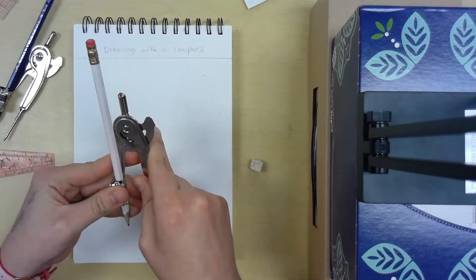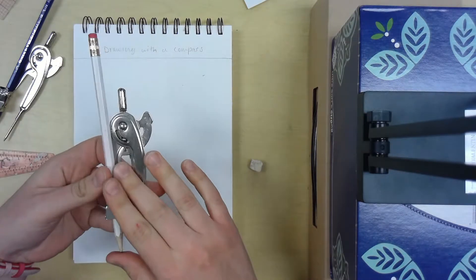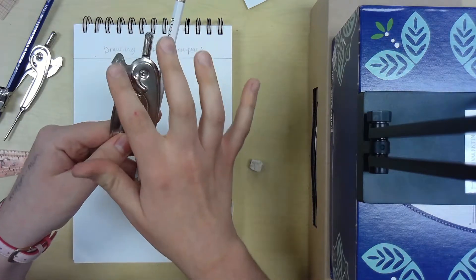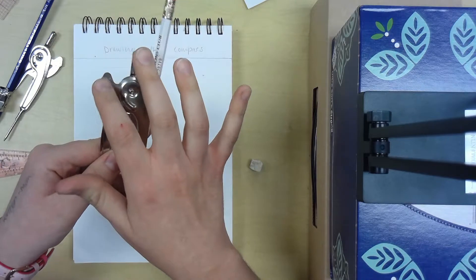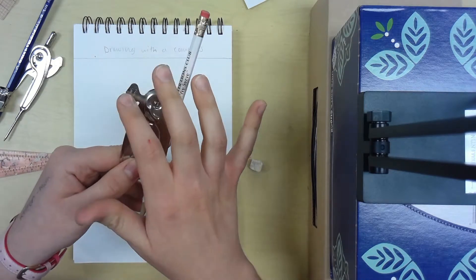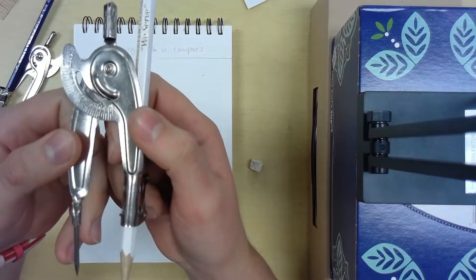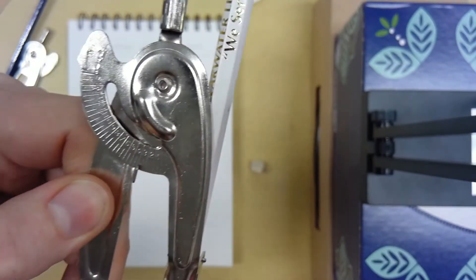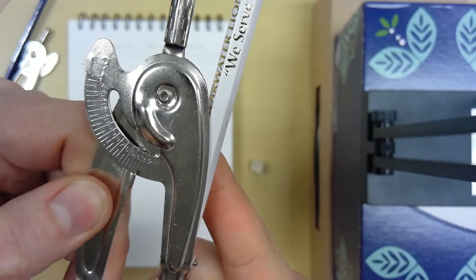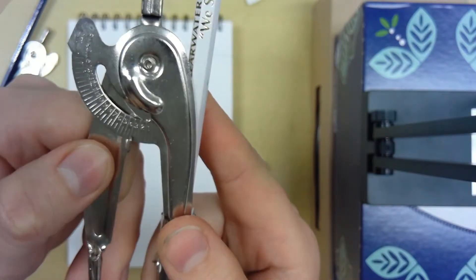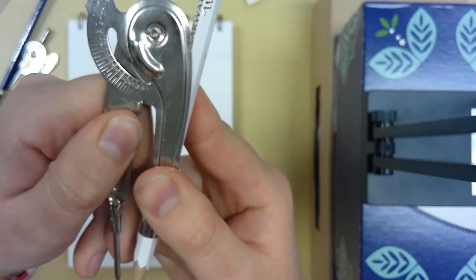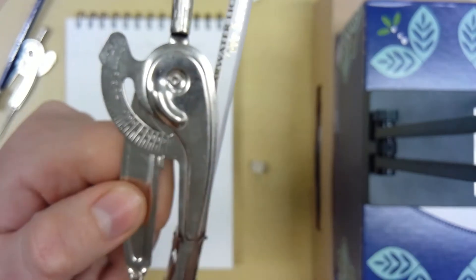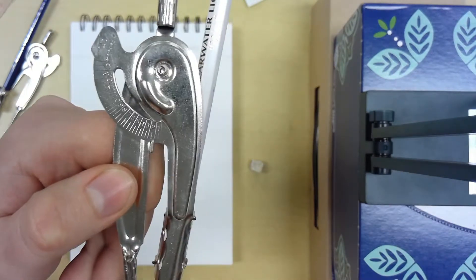After you have your pencil in here, you're going to look on the side of this metal part. It's kind of like a protractor, like a mini tiny protractor. If you see, there's all these little numbers on there. That's your radius of your circle.